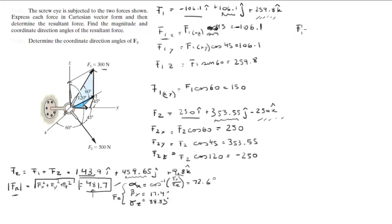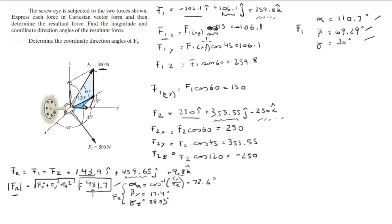Now all that's left is to determine the direction angles of F1. Using the same process, with F1 = 300 and its x, y, z components, don't forget the signs — you get 110.7°, 69.29°, and 30°. The Cartesian vector forms of the two forces and the magnitude and direction angles of the resultant force are the final answers.